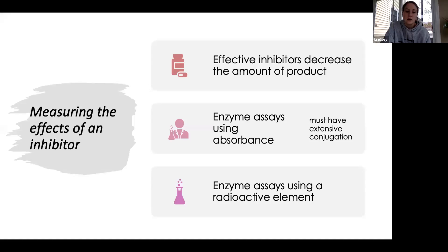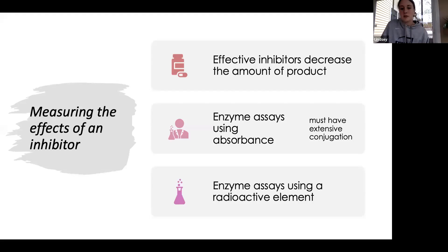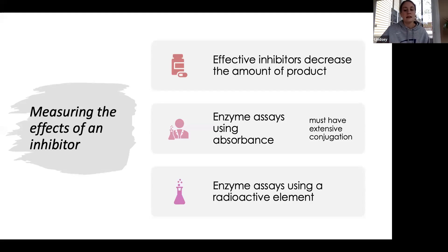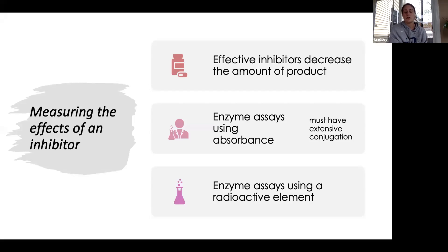The next thing I'll talk about is measuring the effects of an inhibitor to see if it's a good drug. If you want to test a potential inhibitor, you have to be able to measure the amount of product formed — effective inhibitors decrease the amount of product. One way is using enzyme assays with absorbance, but the product often doesn't have extensive conjugation. So you can use an enzyme assay that converts a product or byproduct using other enzymes and molecules like ATP or NADH into something with extensive conjugation so it can be measured on the spectrum.